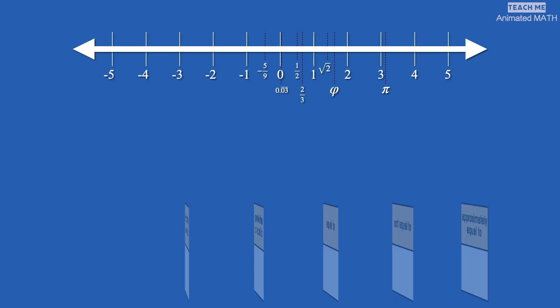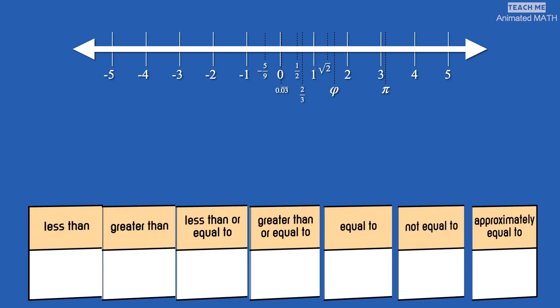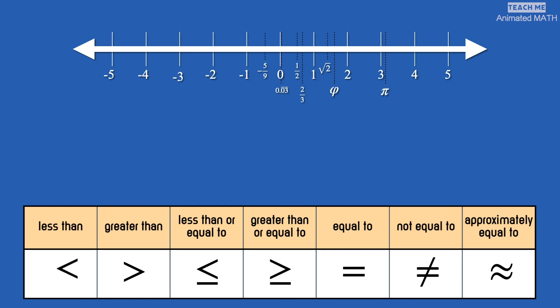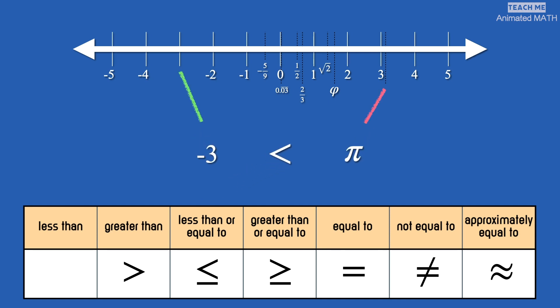To compare two real numbers on the number line, we use these symbols. This symbol means less than. We use it when the first number is to the left of the second number on the number line. In this example, negative 3 is less than pi.